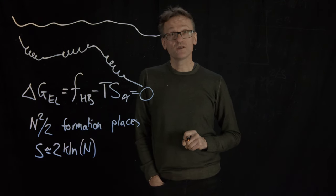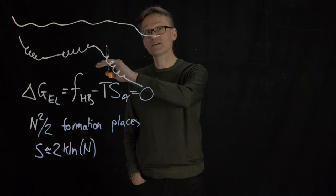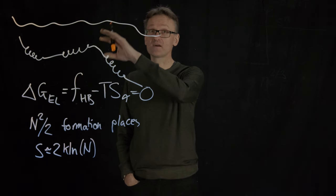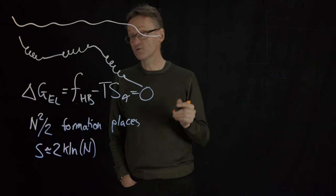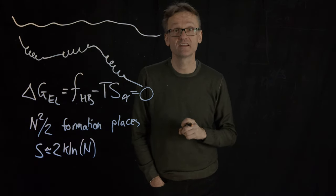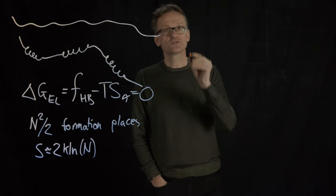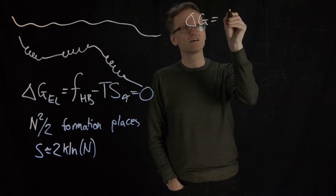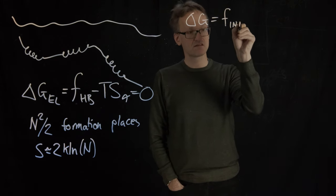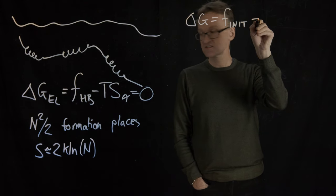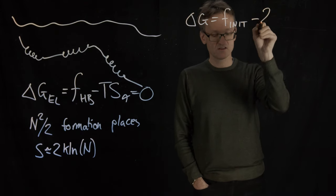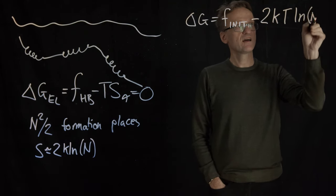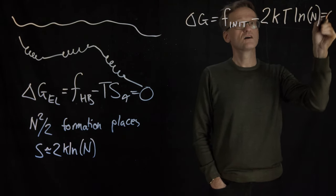And then if I want to look at the midpoint of this transition when I see no net change in helix, I'm not initiating any more helices either and I don't see any helices disappearing. Then I also know that the total delta G should be zero. So delta G total is zero, that would mean that f_init minus the entropy 2kT ln N should be zero.